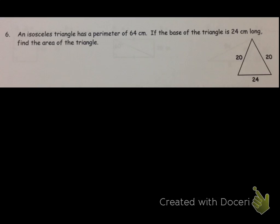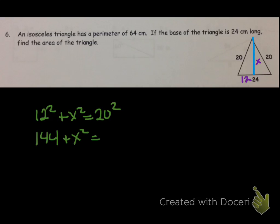An isosceles triangle has a perimeter of 64. If the base of the triangle is 24 centimeters long, find the area of the triangle. We need to find the height in order to do anything. You know it's an isosceles triangle, so you can go ahead and draw in your altitude. Remember, when you draw an altitude from the vertex angle to the base of an isosceles triangle, it splits that base in half, so this is now 12. To find the height using the Pythagorean theorem: 12 squared plus x squared equals 20 squared. So x squared is equal to 256, which means that x is equal to 16.